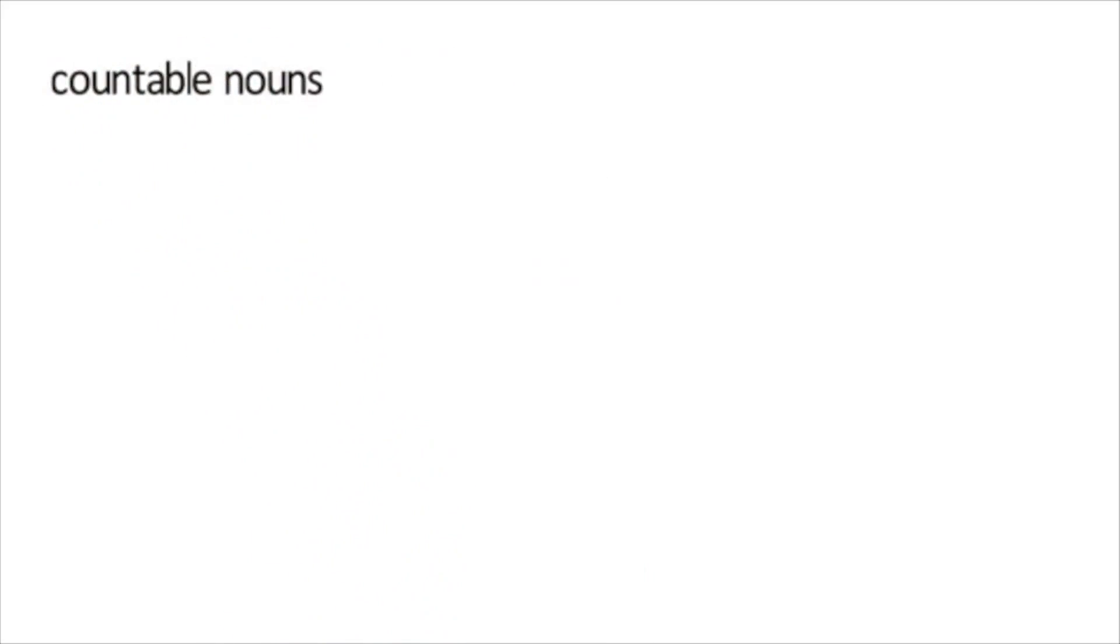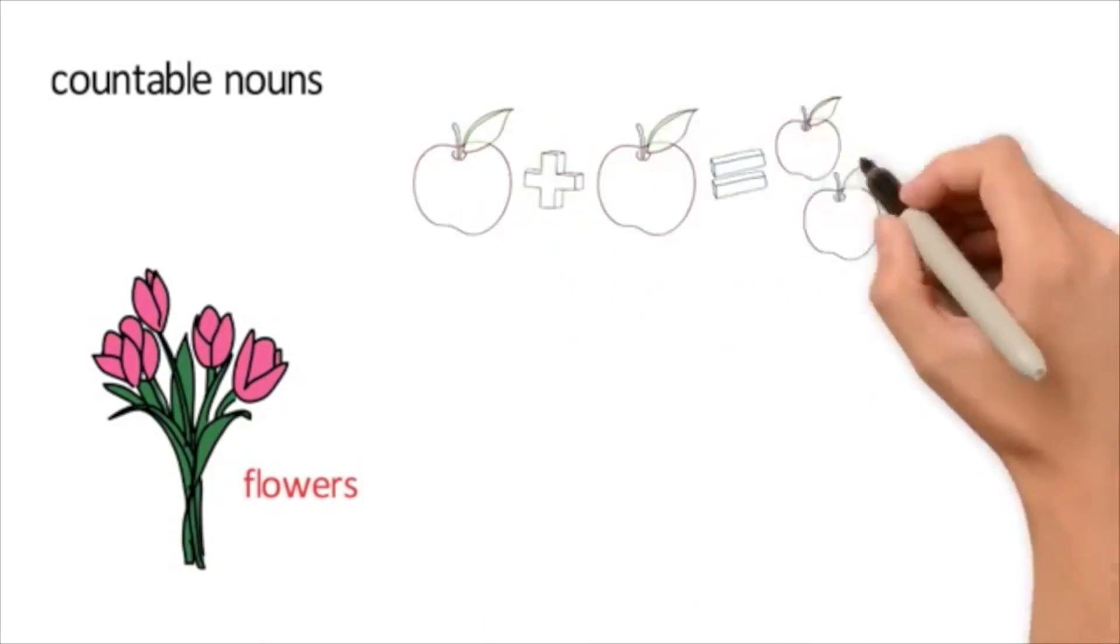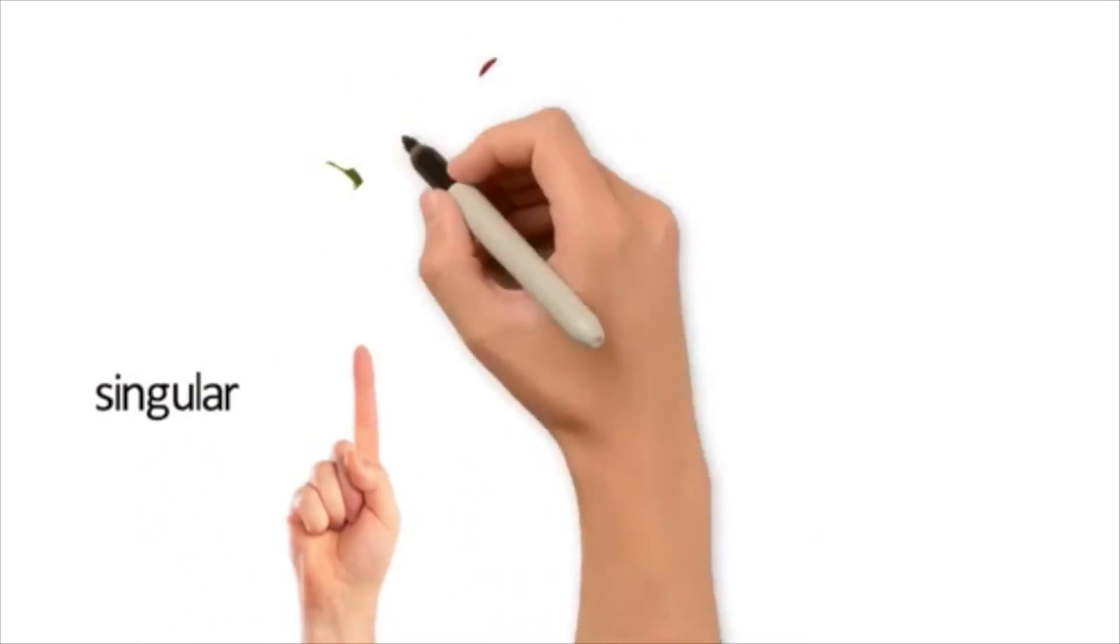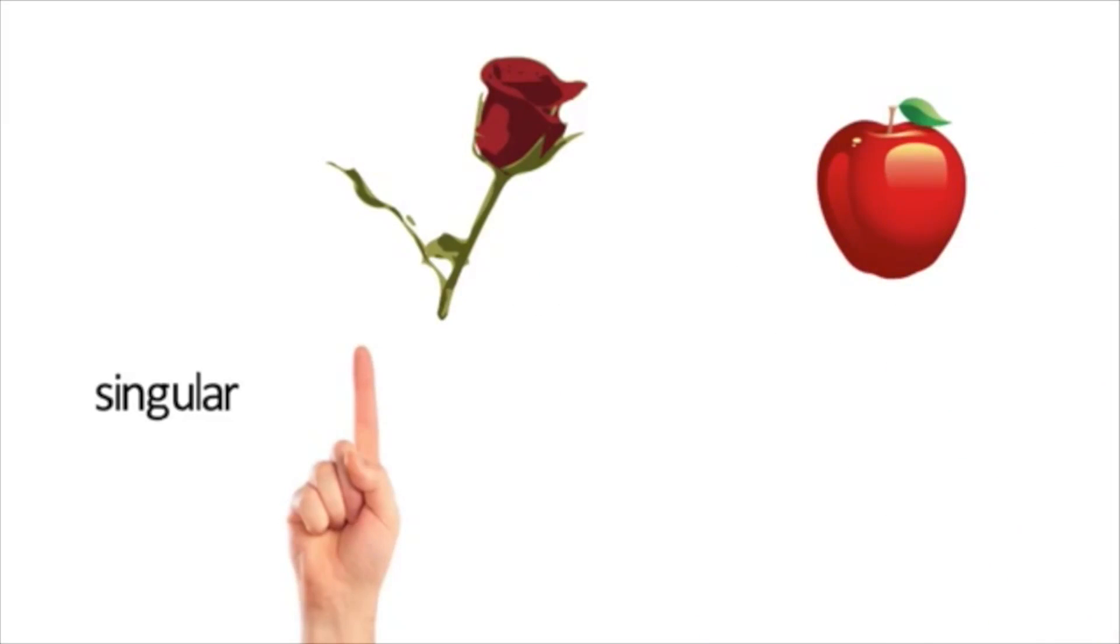Countable nouns are nouns that you can count, such as flowers, apples and houses. They can be singular, such as a flower, one flower, an apple, one apple, a house, one house.